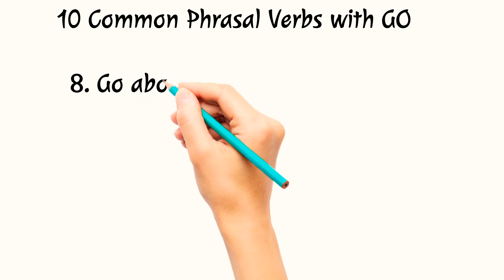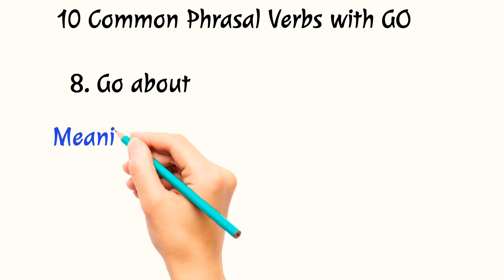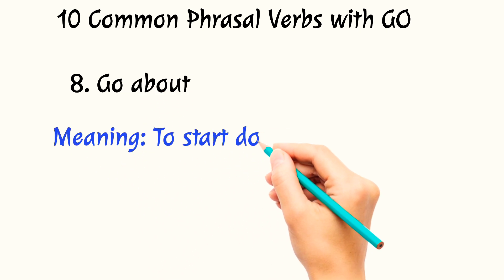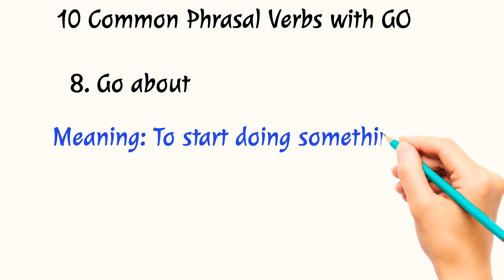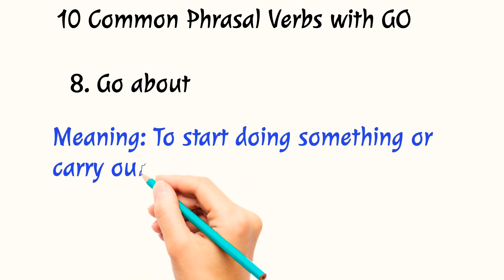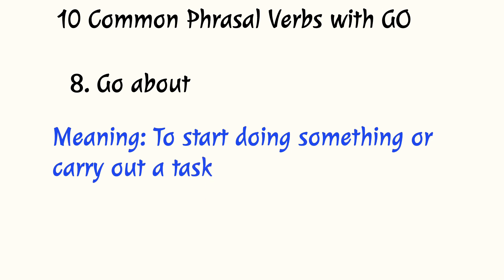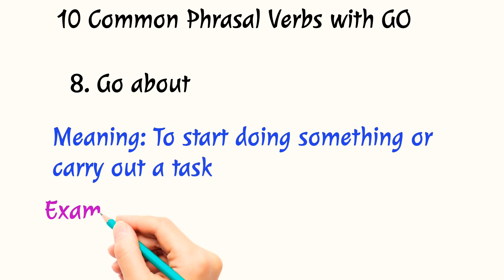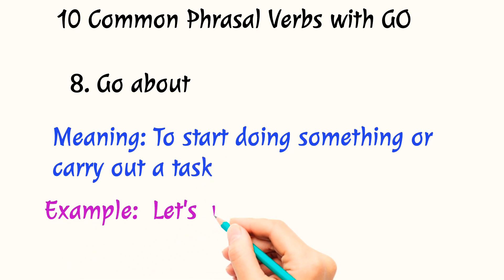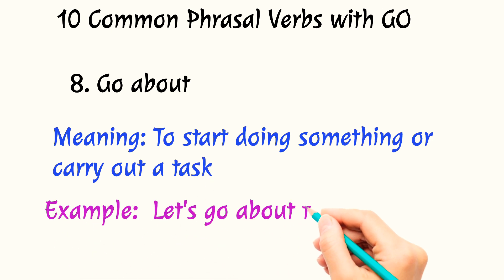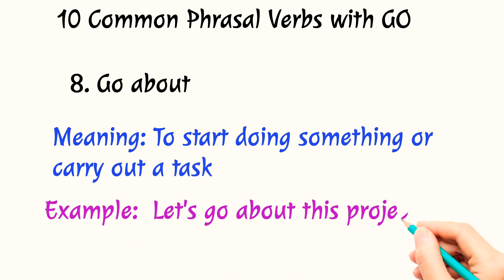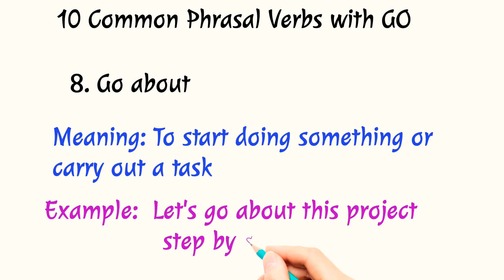The eighth phrasal verb is 'go about.' It means to start doing something or carry out a task. For example: let's go about this project step by step.